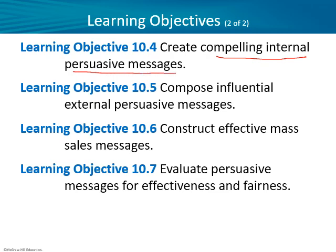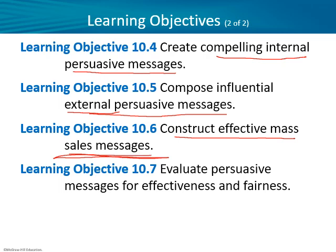We'll talk about compelling internal persuasive messages — messages to co-workers and colleagues, like the Dwight Schrute example — and also external persuasive messages going out to clients and customers; that's what the Office staff were trying to train Dwight to do. We'll also look at how to construct effective mass sales messages. You can take whole courses on that over in mass comm, but we'll touch on it. And then we'll wrap up by evaluating persuasive messages for effectiveness.